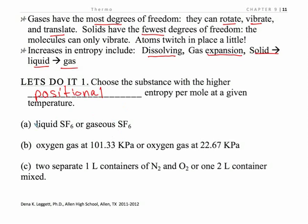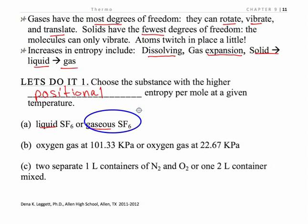Let's take a look at positional entropy with an example. We have liquid sulfur hexafluoride and gaseous sulfur hexafluoride. The more free situation is the gaseous form — many more ways the molecules can move, be arranged, and vibrate. It's like the difference between being at home, where you can move around but aren't totally free, versus being a gas, where you're totally free to come and go as you want.